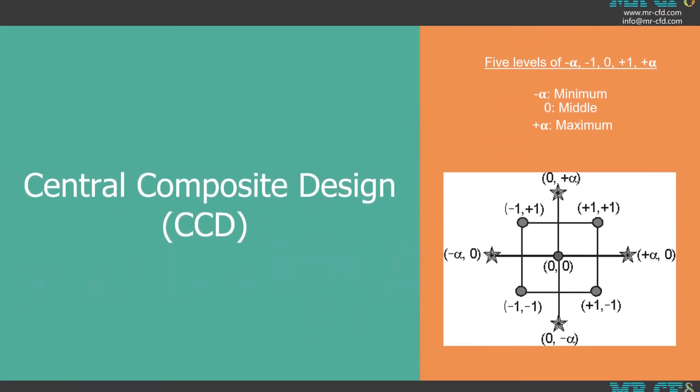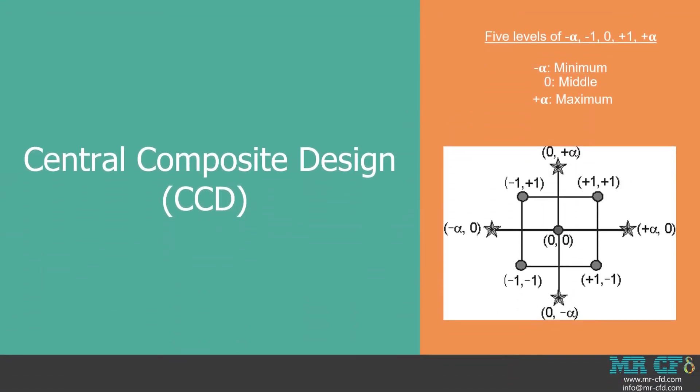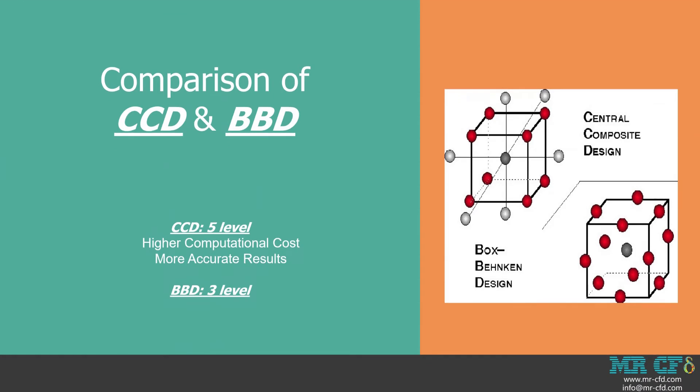While in the CCD method, the division level increases to five different levels including minus alpha, minus 1, 0, plus 1, and plus alpha in which the plus alpha and minus alpha are the maximum and minimum of the defined range for each input parameter. As you can see, the CCD method divides the range of each parameter into five levels and generates more design points compared to BBD method.